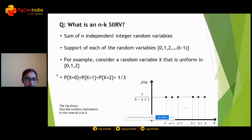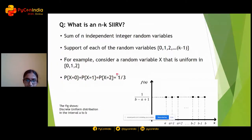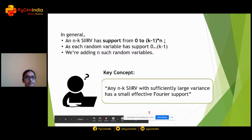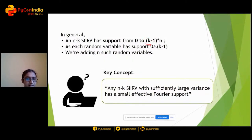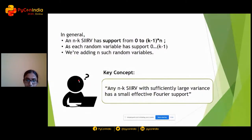For simplicity, you can call it NKSIRB. A toy example: if it is uniform on 0, 1, 2, the support size is 3 and each point has probability 1/3. Each NKSIRB has support from 0 through (k-1)×N, because each of the N random variables has support 0 through k-1 and you are adding n independent copies. The key concept is: any NKSIRB with sufficiently large variance has small effective Fourier support.